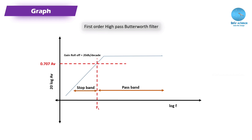Lower frequency signals will be blocked and high frequency signals will be bypassed. The stop band region transitions to the pass band region. The first order high pass filter has a gain roll-off of 20 dB per decade in the stop band region.